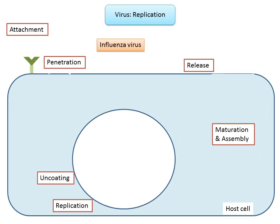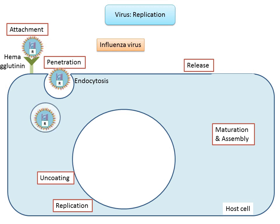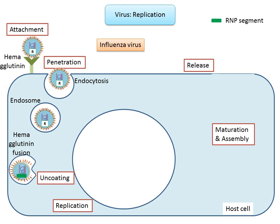Turning to RNA virus replication, using influenza virus as an example: influenza virus has hemagglutinin, a homotrimer that forms spikes on the viral lipid membrane. These spikes bind to sialic acid on the host cell membrane surface. Upon binding, receptor-mediated endocytosis occurs and the virus enters the host cell in an endosome. The endosome's low pH of around 5 to 6 triggers fusion of the viral and endosomal membranes. The M2 protein allows an influx of hydrogen ions into the virion interior, promoting dissociation of the RNP segments and their release into the cytoplasm — the step of uncoating.